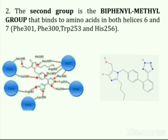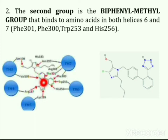The second group is the biphenyl methyl group and it binds to amino acids in both helix 6 and 7. This biphenyl methyl group binds to phenylalanine 301, phenylalanine 300, tryptophan 253, and histidine 256.